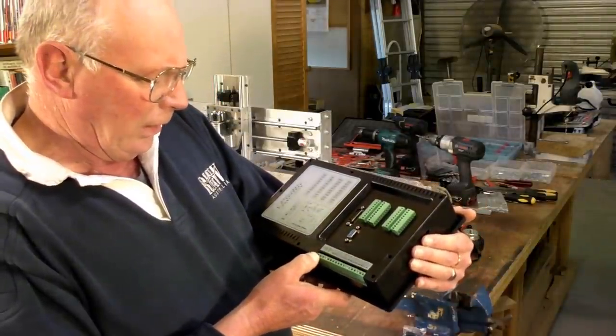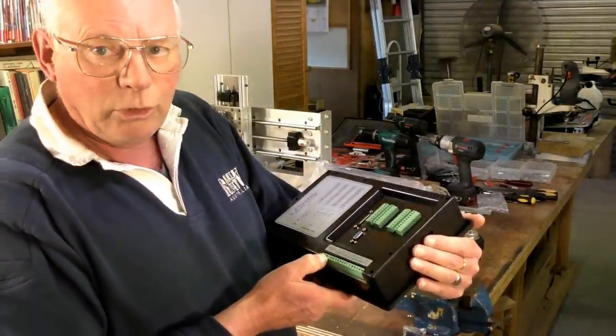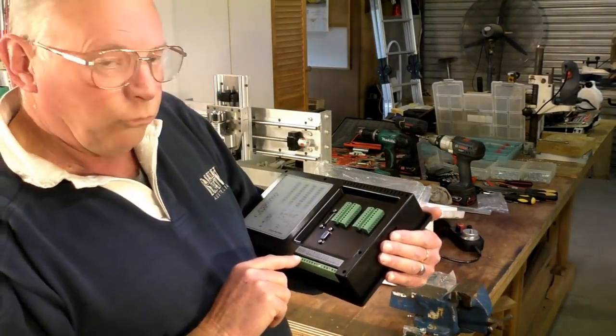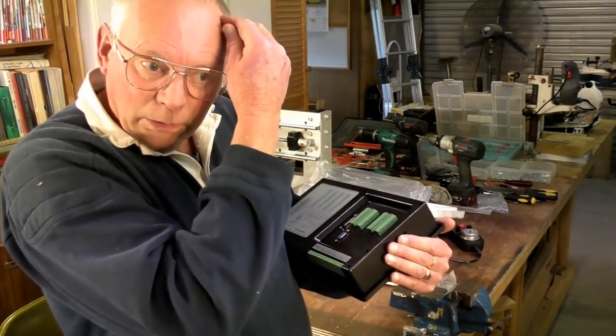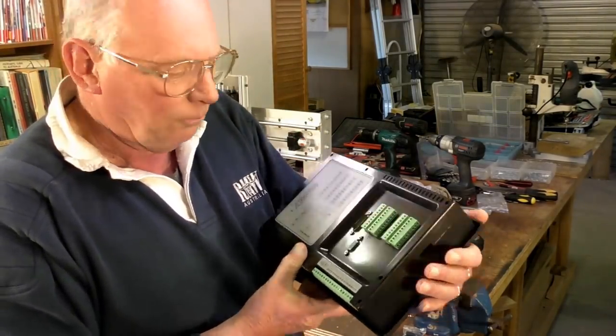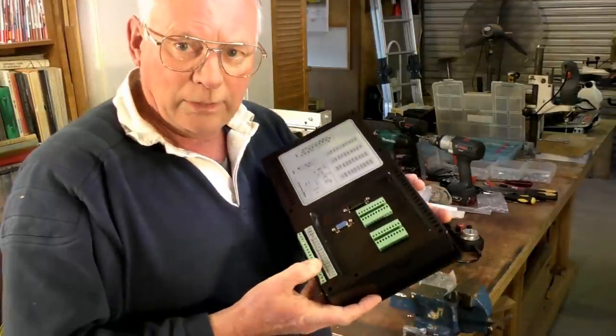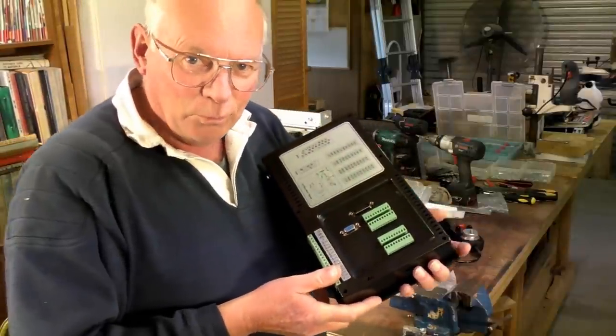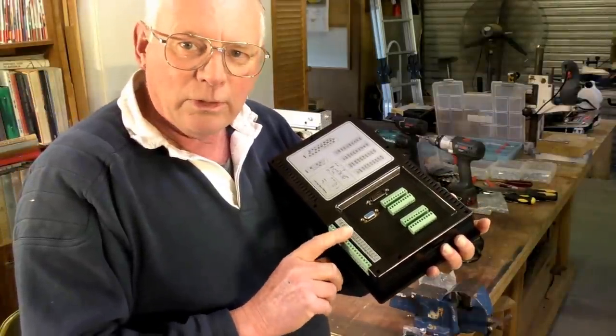Twelve volt supply in, ground connections. This will supply ground to all the drivers and it will also supply 5 volts, so you don't have to have a separate 5 volt supply like you normally would do. Pulse and direction on all axes. If you don't understand what that means at the moment, by the end of this series you will understand what pulse and direction actually means.